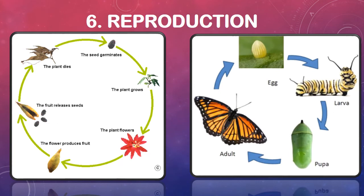Now we will talk about reproduction. This is the process by which new life is created by living things. For animals, for example, a larva becomes an adult butterfly and then lays eggs which become new butterflies. For plants, a seed grows from a plant, a flower grows and produces more seeds. From one plant, new plants will grow. All living things reproduce.